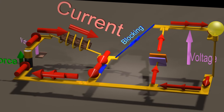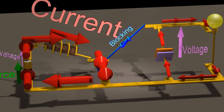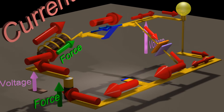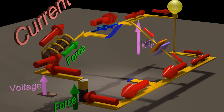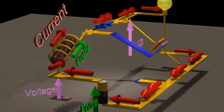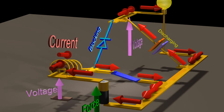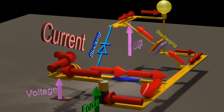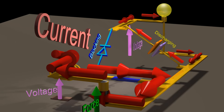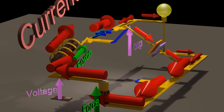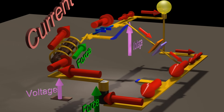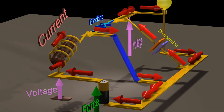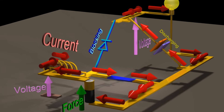Suppose we keep turning the switch on and off. By continuously turning the switch on and off, we have created a DC output voltage at the light bulb that is higher than the voltage of the battery. We call this a boost converter.